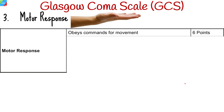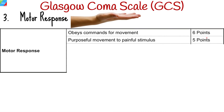For motor response, the highest points that can be scored is 6 points. Start by asking the patient to lift one of their arms off the bed and make a fist. If the patient responds to command correctly, they would score 6 points. If the patient does not obey command, then try to elicit motor response by applying painful stimulus — by squeezing the trapezius muscle and applying pressure to the superorbital notch. When the patient attempts to approach the site where you are applying a painful stimulus, this is referred to as localizing to pain.